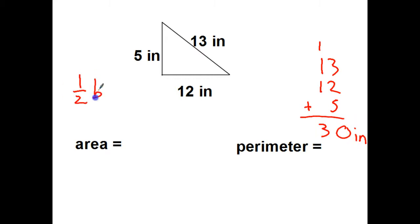Area, half of base times height. Here's the two numbers I'm going to be using. I want to take half of the 12 is a 6. 6 times 5 equals 30 square inches.